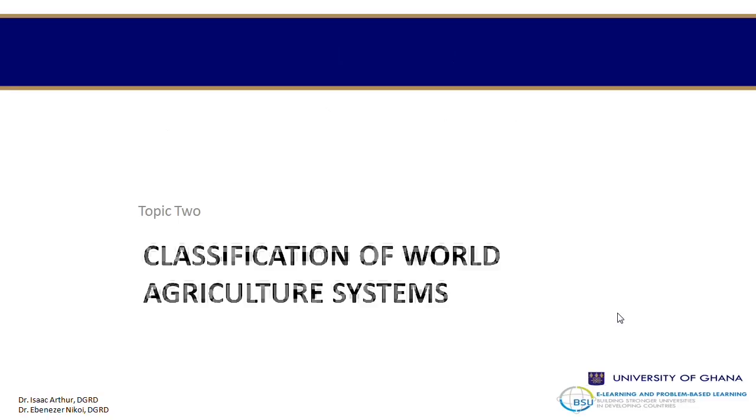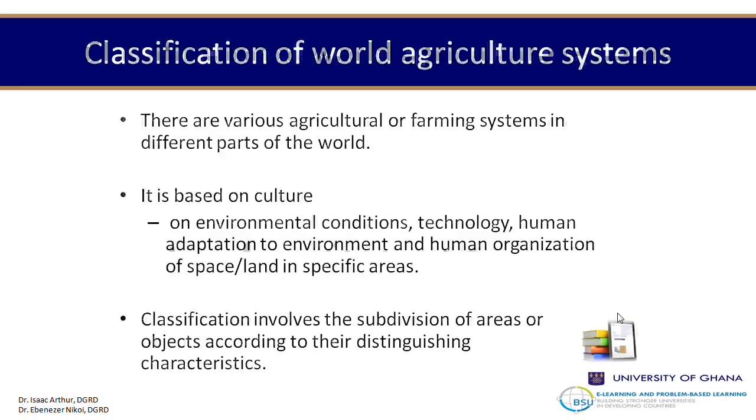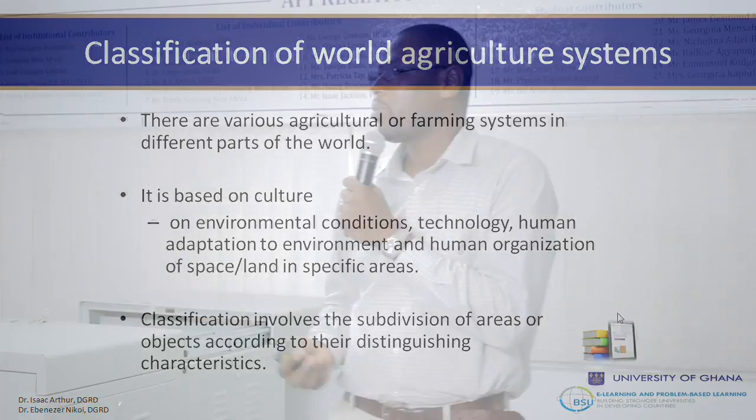Moving on to the classification of world agriculture systems. When it comes to classifications of agriculture, there are various systems available, but usually it is based on culture. Culture shapes people's lives and their thinking. How does culture actually emerge? The environmental conditions of a country play a major role. In advanced countries, they have a more mechanized way of farming — the environment has encouraged them to go into this kind of culture.